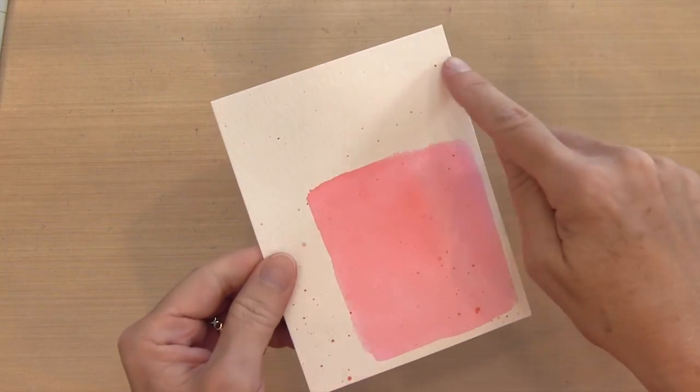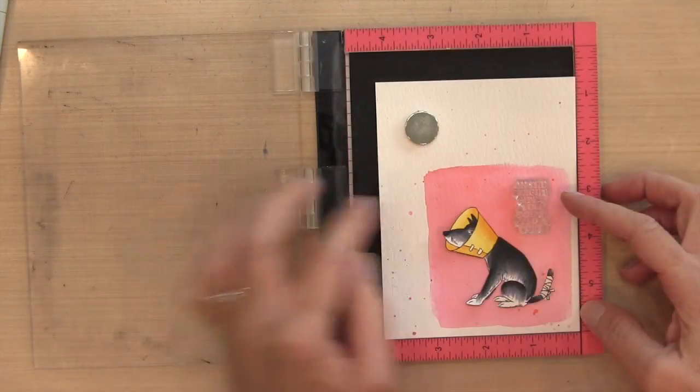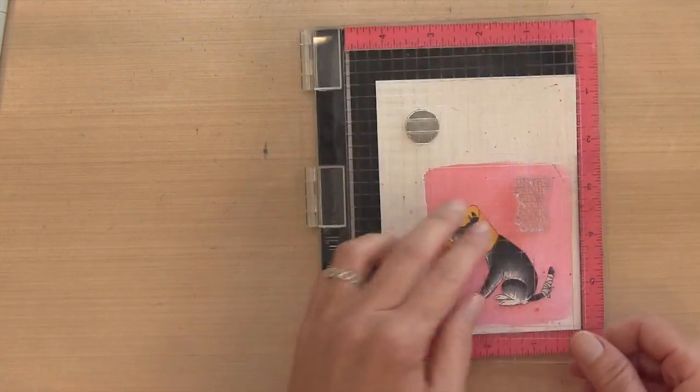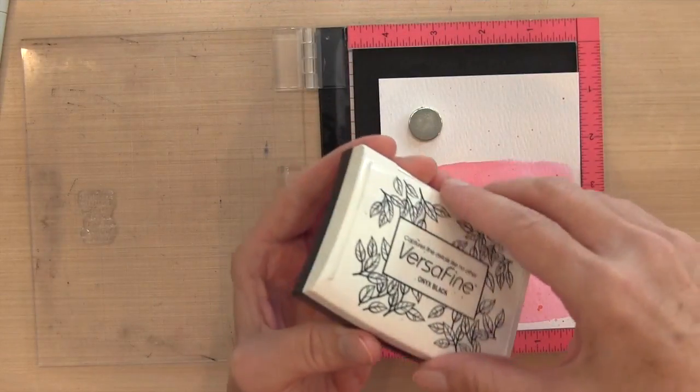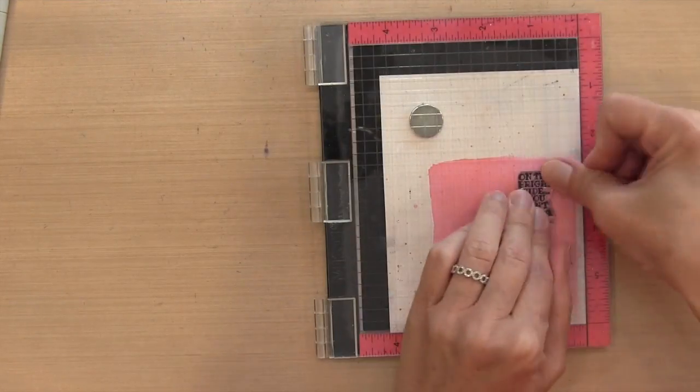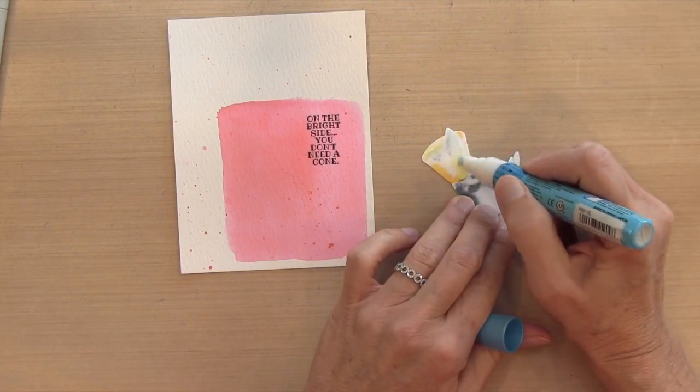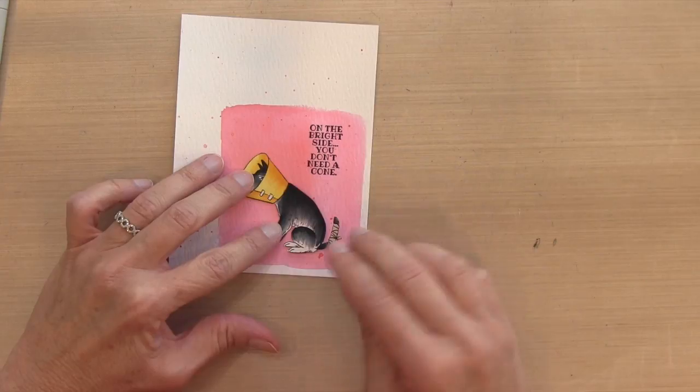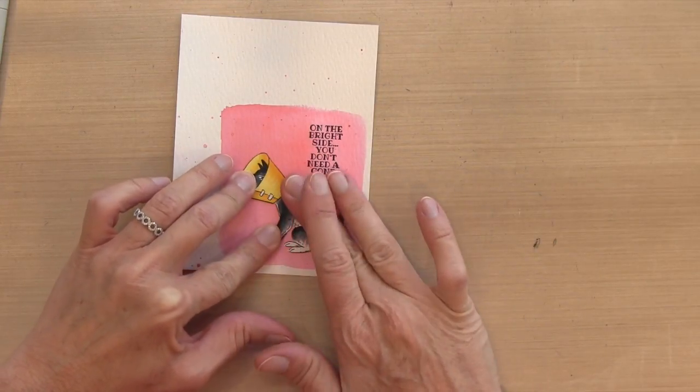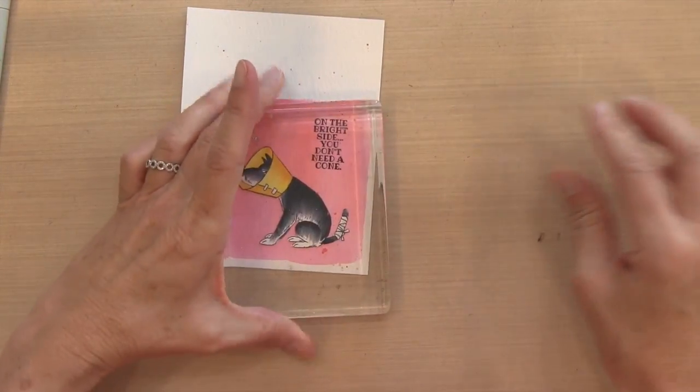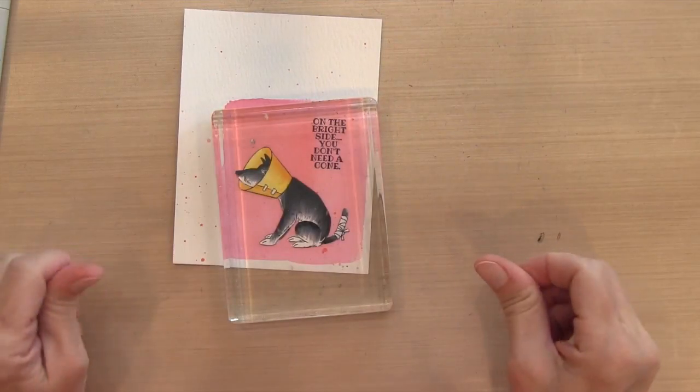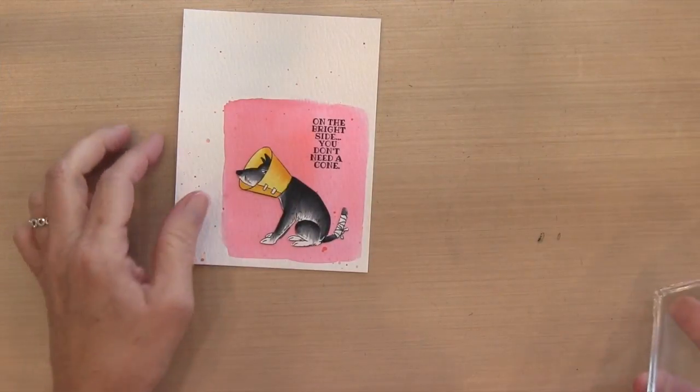I'm going to trim this panel an eighth of an inch from two sides so I'll have a sixteenth of an inch mat. Now I'm going to stamp my sentiment with some Versafine Black Onyx ink in my Misti. To adhere my dog, I'm going to use the two-way glue pen because I want to make sure I get all over the whole thing. I don't want it lifting up on this textured cardstock. So to make sure it was secure, I just put an acrylic block on it and left it for a few minutes to make sure it was really sticking there.